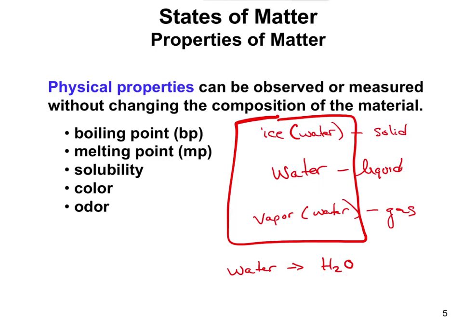The boiling point of water is 100 degrees Celsius — that's when it goes from a liquid to a gas. The melting point is when it goes from a solid to a liquid. Solubility refers to whether water or a substance can dissolve in another liquid — for example, is a salt soluble in water? Color and odor are also physical properties. These are all things that aren't going to change whether you heat something up or cool it down. The solid form and gas form will still have, for instance, the same odor or color.